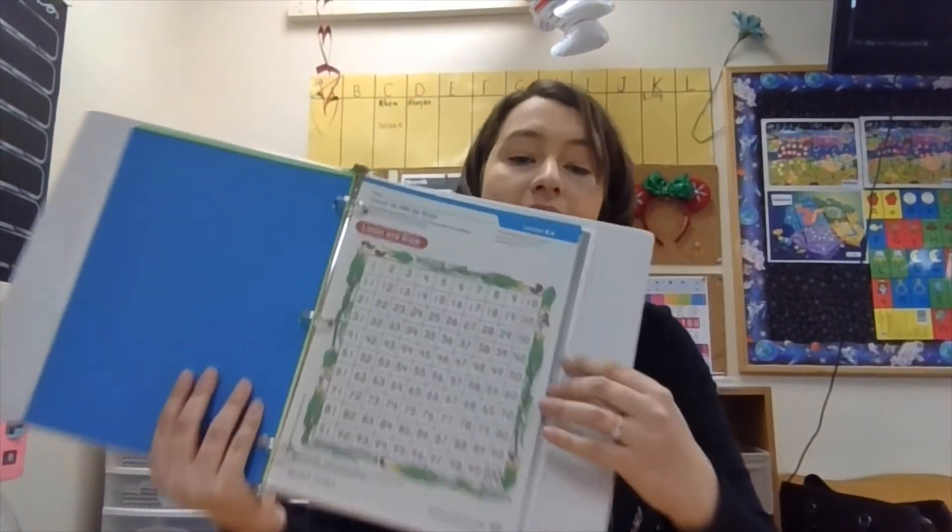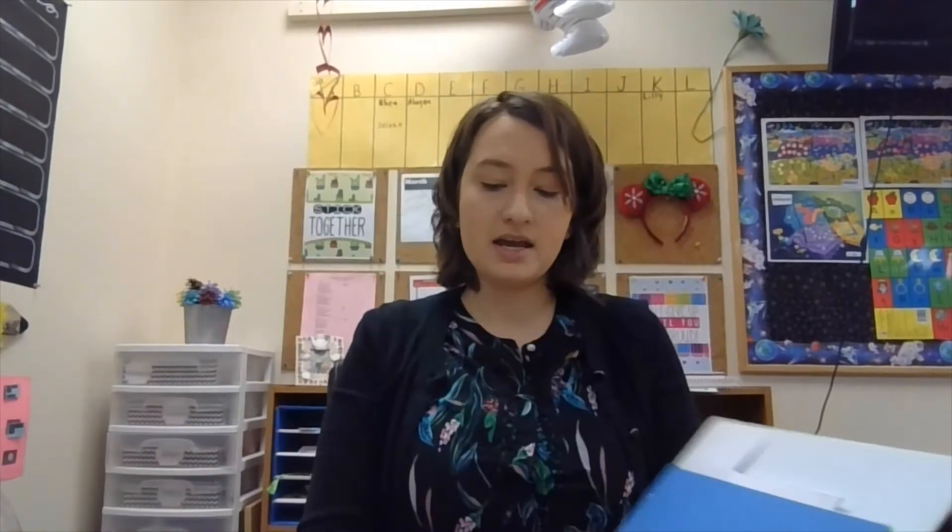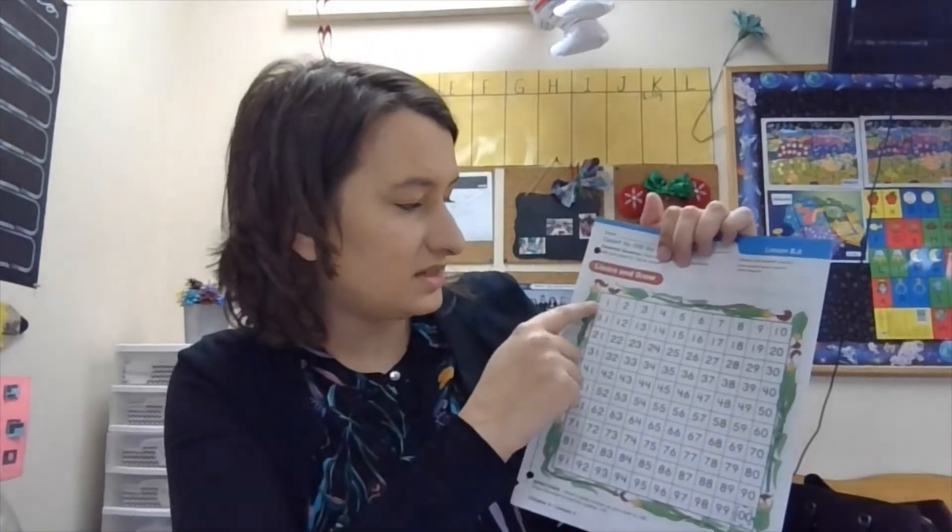So we're going to turn to Tuesday, which is blue. And the very first thing you have is your math. So for this, I need you to get a pencil and get ready to count. So Nana might need to be here to help you with this. If not, you can do it all by yourself. So I want you to write your name and date right here. And then I want you to point as you count each number. So let's go ahead and do this together.